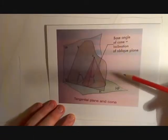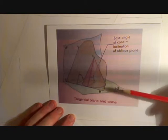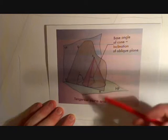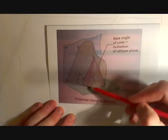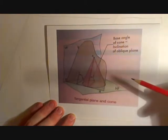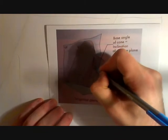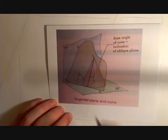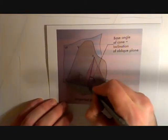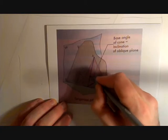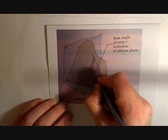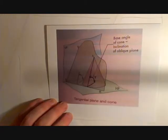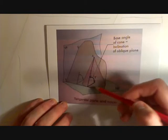Here we see how we can incorporate the two principles of the cone and the tangent plane. The oblique plane forms a tangent to the cone. We now know this tangent forms a generator, which is this line, and this holds the true inclination angle x of the oblique plane, because it is at the same angle as the tangent to the plane.